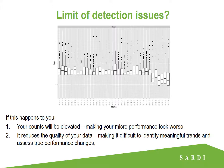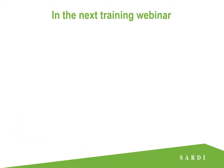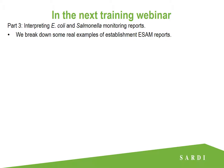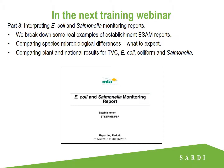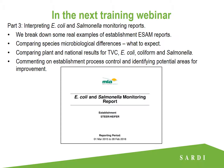That wraps it up for part two of our ESAM webinar series. Hopefully that gives you a bit more understanding of the microbial and statistical concepts relating to your monthly ESAM reports, and starts to get you thinking about what your results say about the level of process control at your own establishments. In the next ESAM webinar, we will go through some real examples of establishment ESAM reports, breaking down the reports step by step. We'll compare micro results looking at species microbiological differences and what to expect, and we'll compare plant and national results for TVC, E. coli, coliform and Salmonella. We'll also do some more commenting on establishment process control and helping you identify potential areas for improvement. Thank you for watching — we'll see you in the next ESAM webinar.